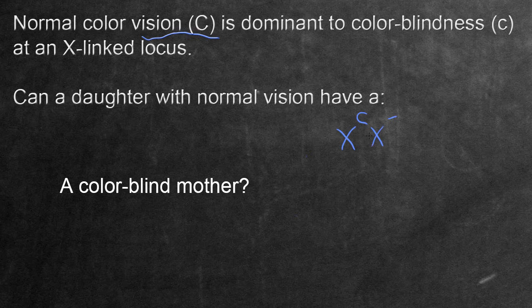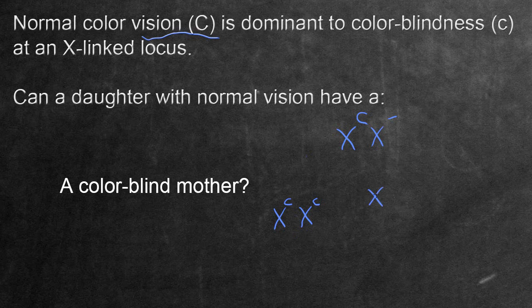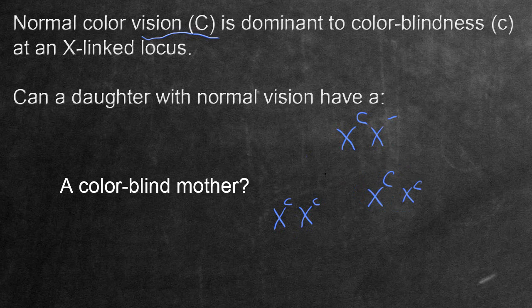Can a daughter with normal vision have a colorblind mother? For the mother to be colorblind, she has to be homozygous recessive — two little c's. Since the mother can only donate a recessive allele to the daughter, in order for the daughter to still have normal vision, the father has to donate a dominant allele. Therefore, if the mother is colorblind, the father must have normal color vision in order for the daughter to have normal vision.